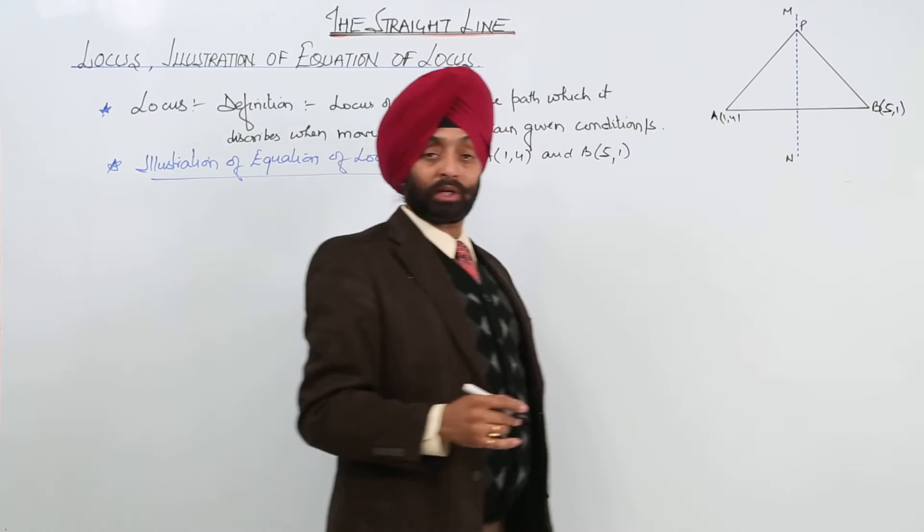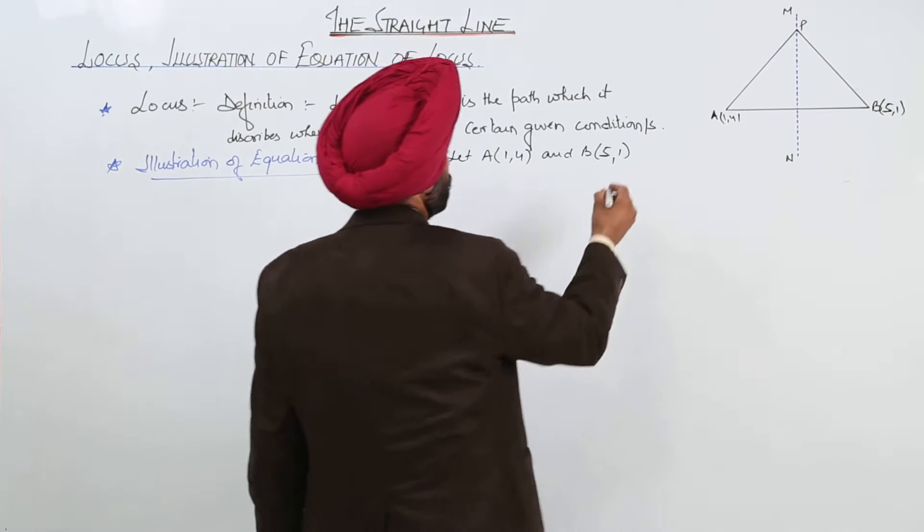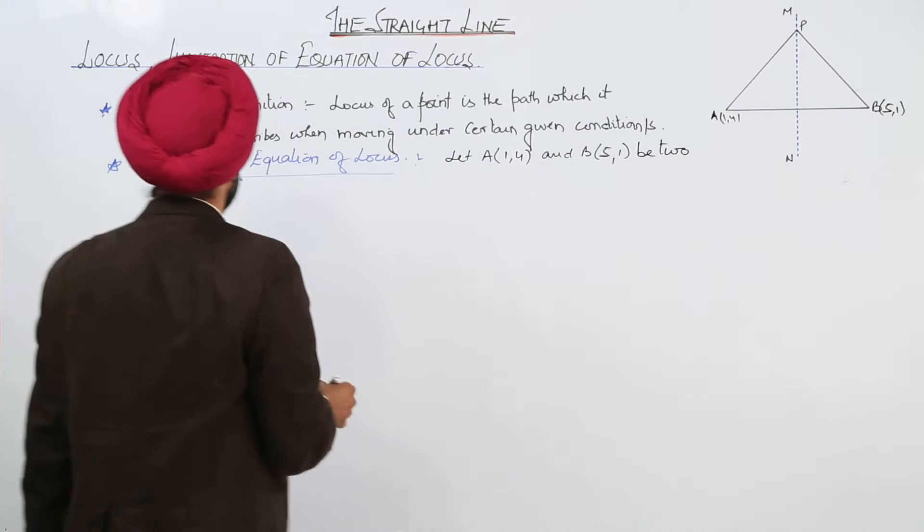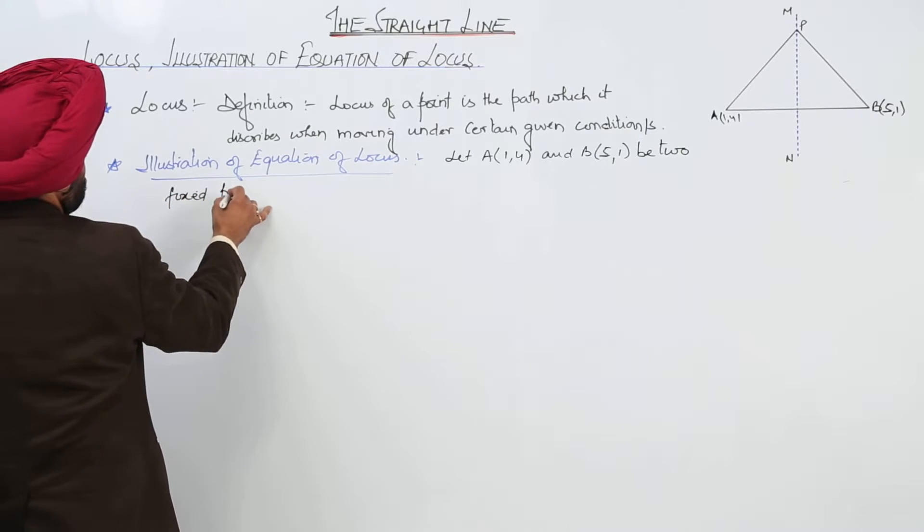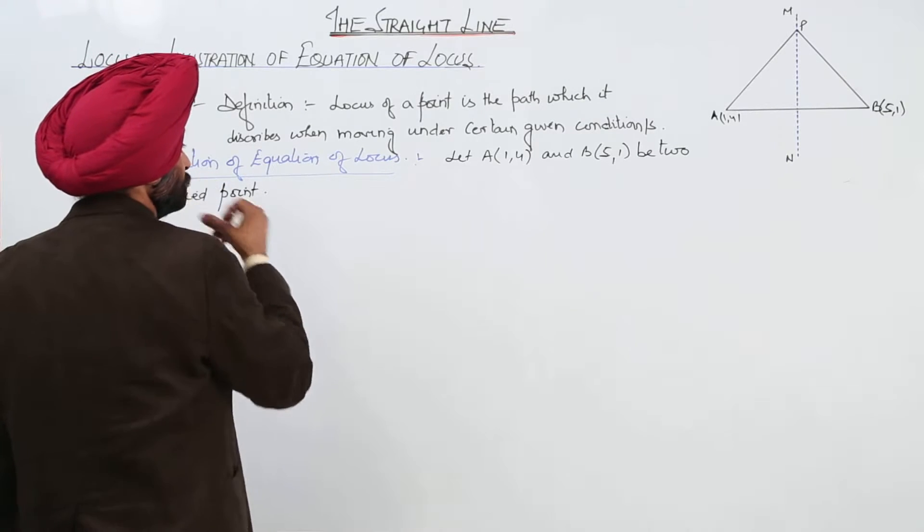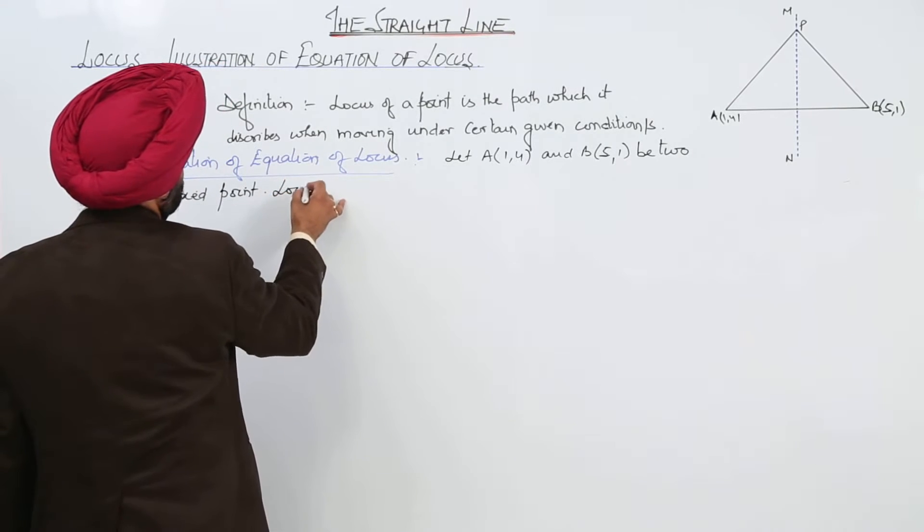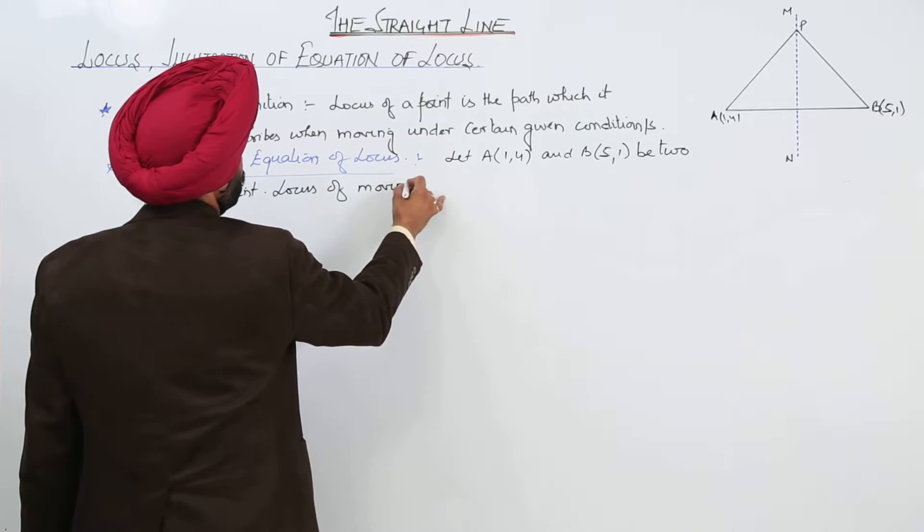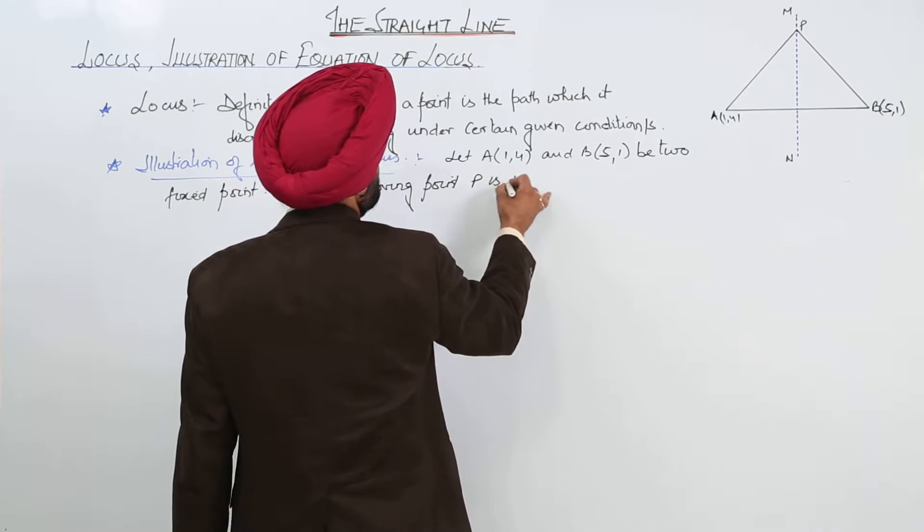Now, if you are drawing this on a graph, it will be slightly tilting. So, let A be 1, 4 and B be 5, 1, be two fixed points.